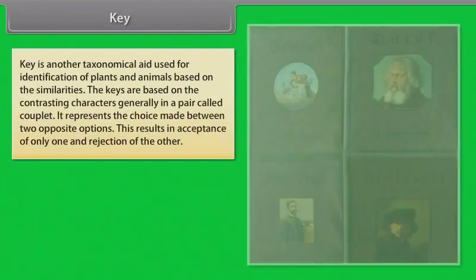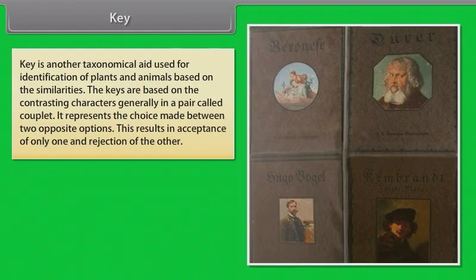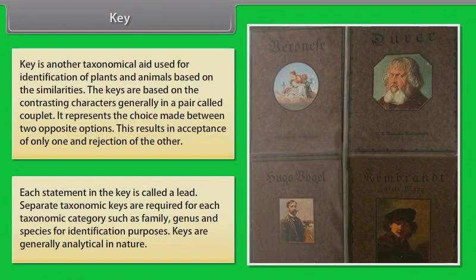A key is another taxonomical aid used for identification of plants and animals based on similarities. Keys are based on contrasting characters generally in pairs called couplets. It represents the choice made between two opposite options, resulting in acceptance of only one and rejection of the other. Each statement in the key is called a lead. Separate taxonomic keys are required for each taxonomic category such as family, genus and species for identification purposes. Keys are generally analytical in nature.